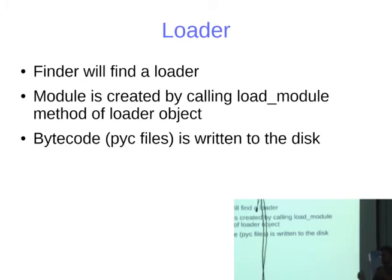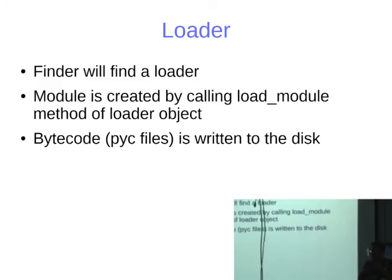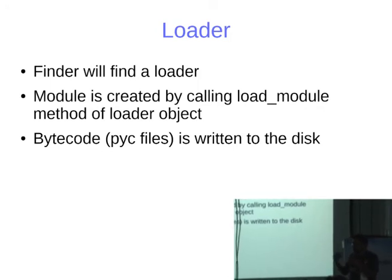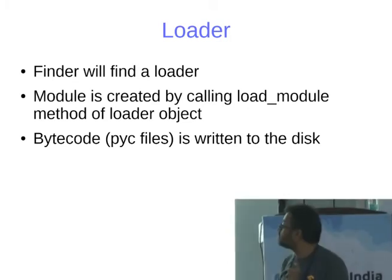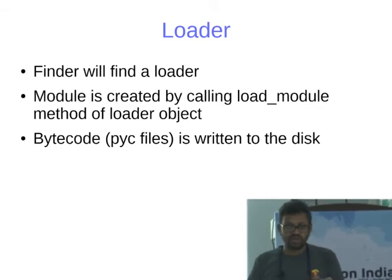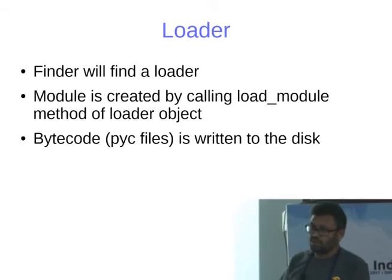To recap: when trying to import a module, look at the module cache first. If it's not there, go to sys.meta_path to ask each finder whether it can find a module. If not found, go to path hooks. If still not found, raise an error. Once a loader is found, create a module object — take the source code, compile it to bytecode, create a module object, and execute in that module object's scope.